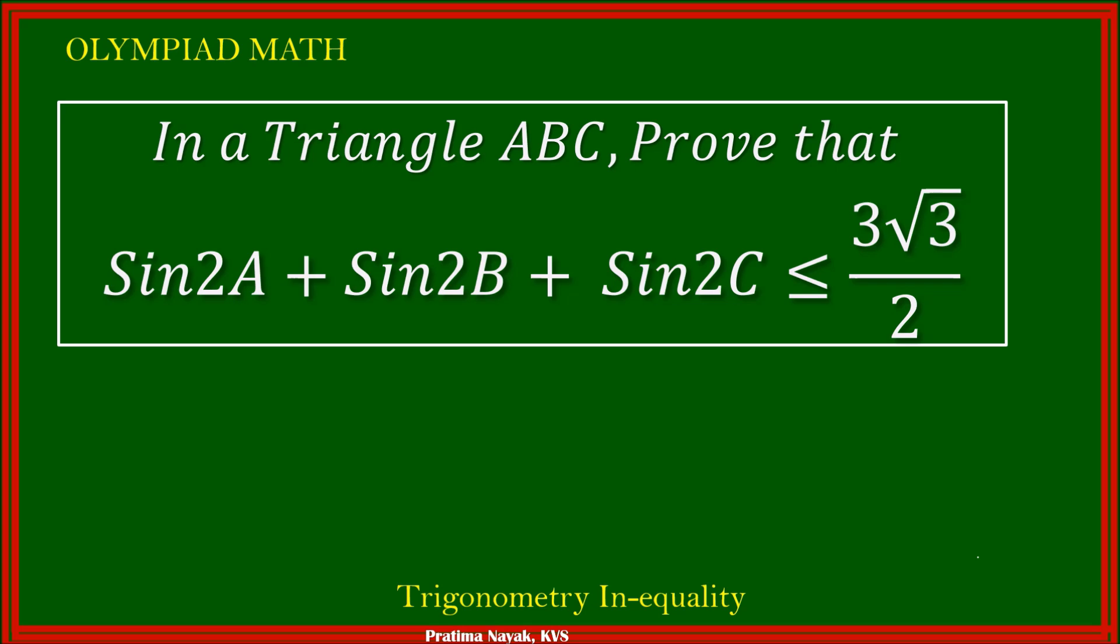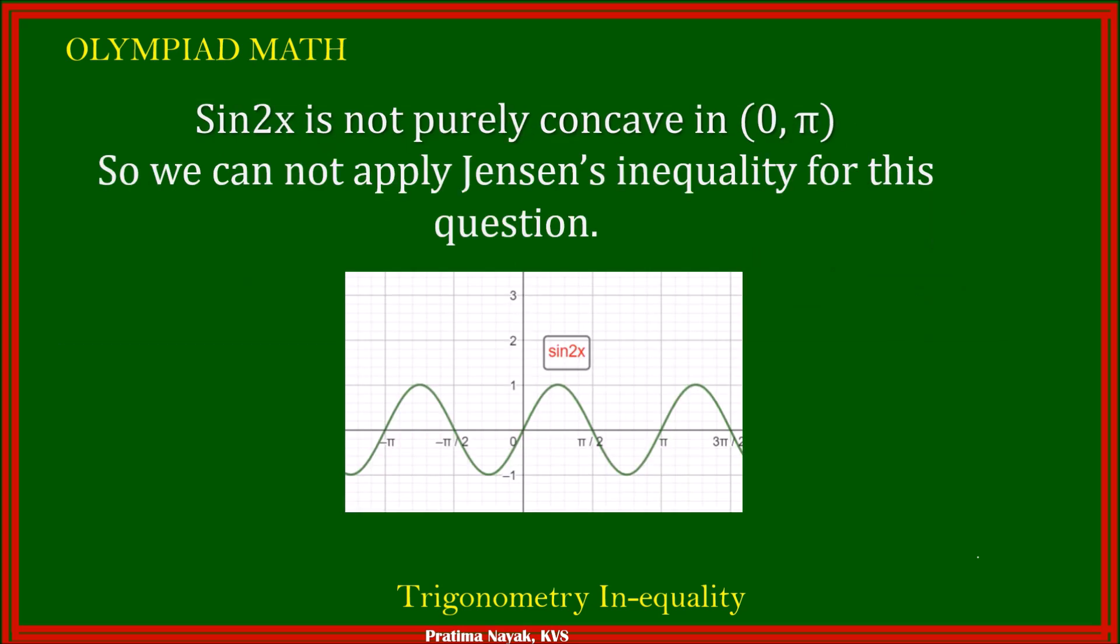Another question. In a triangle ABC, prove that sin of 2A plus sin of 2B plus sin of 2C is less than or equal to 3 square root 3 over 2. Here the graph of sin 2x from 0 to pi is not purely concave. From 0 to pi by 2 it is concave and from pi by 2 to pi it is convex. So we cannot use Jensen's inequality. We will go for a different method.